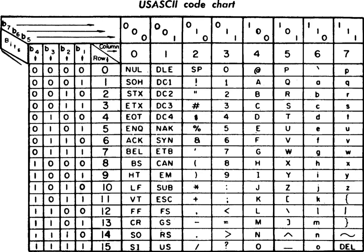The escape character (code 27) was intended originally to allow sending other control characters as literals instead of invoking their meaning. This is the same meaning of 'escape' encountered in URL encodings, C language strings, and other systems where certain characters have a reserved meaning. Over time this meaning has been co-opted and eventually changed. In modern use, an ESC sent to the terminal usually indicates the start of a command sequence, usually in the form of a so-called ANSI escape code — or more properly a control sequence introducer from ECMA-48 and its successors — beginning with ESC followed by an opening square bracket character.